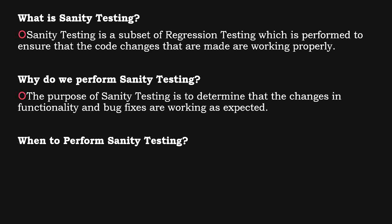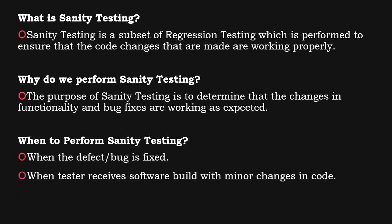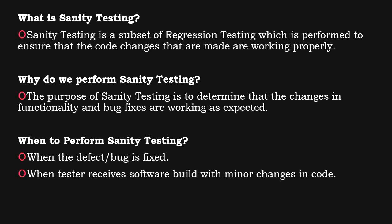When to perform sanity testing? When a defect or bug is fixed and when the tester receives a software build with minor changes in the code. For example, say you raised a bug saying that on the login screen, the acceptance criteria states the username field should accept only five digits, but it is accepting more than five digits. To make sure that after the bug fix it is working fine, you will test by providing different sets of inputs — including inputs with fewer digits. That is how you test the particular module, and that is what sanity testing is.